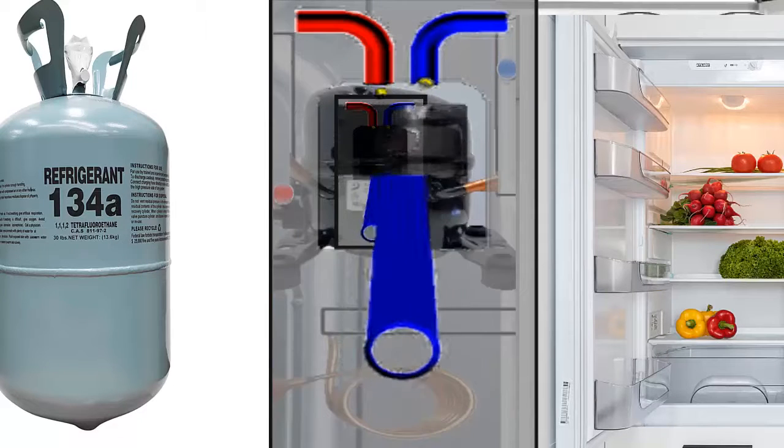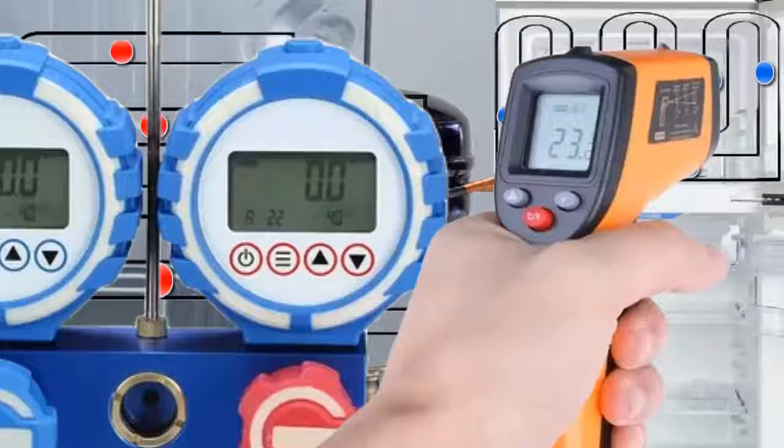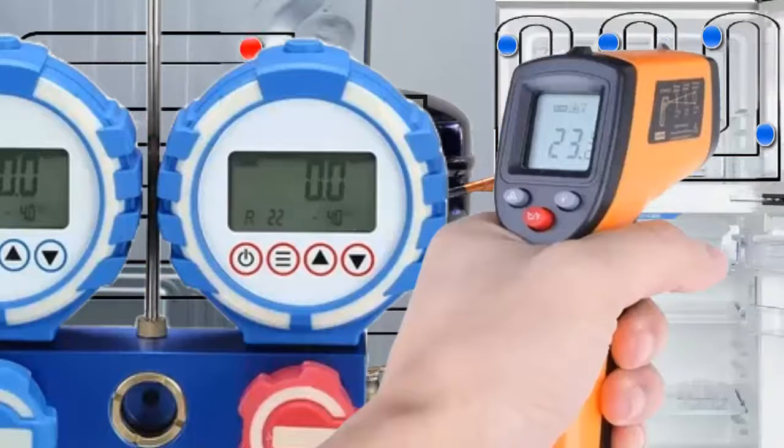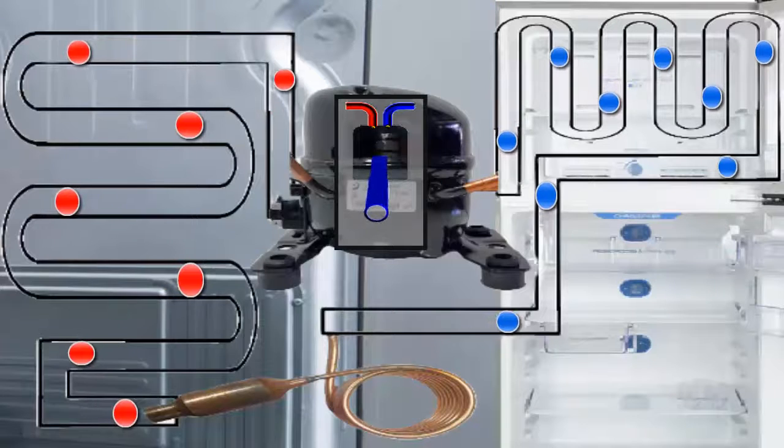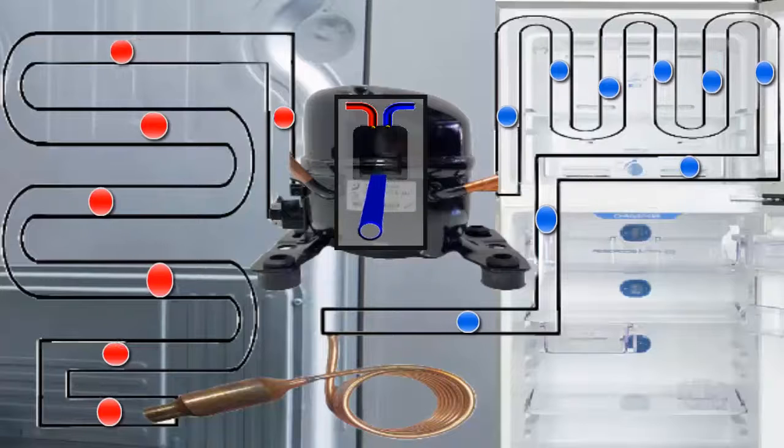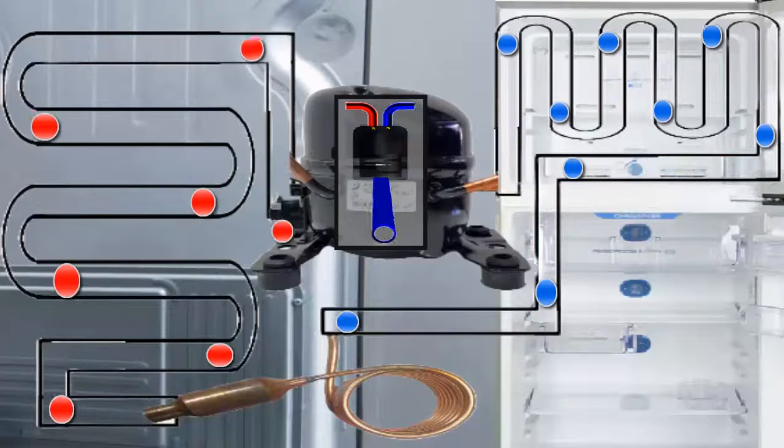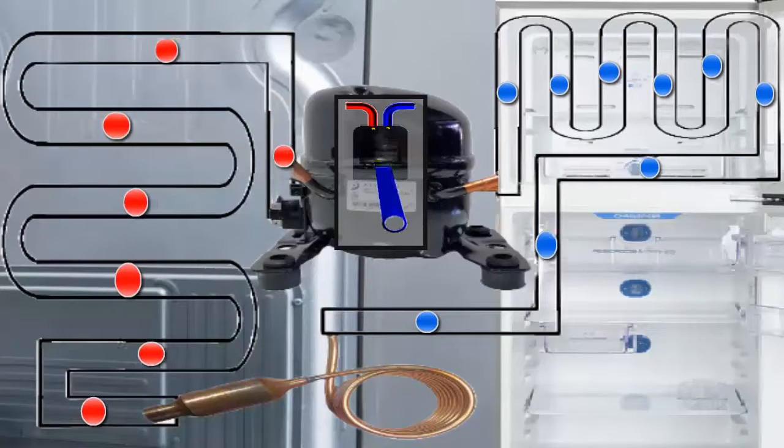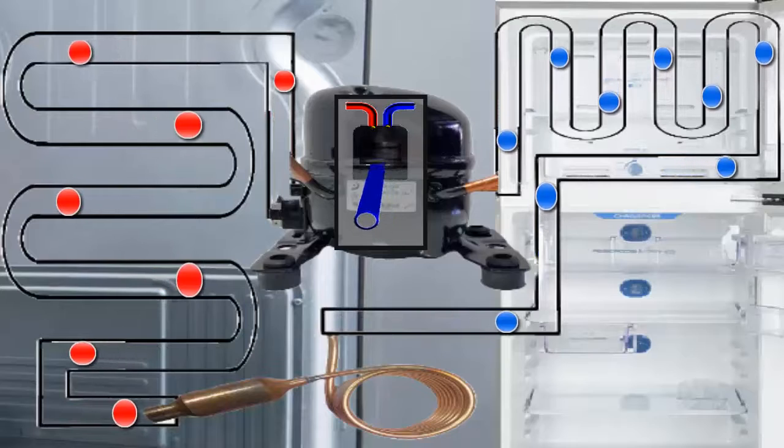In this video, we will study the operating pressures of the refrigerant gas R134A in a household freezer, the parts of the equipment, and its operation. On the screen, we observe the refrigeration circuit of a household freezer that operates with refrigerant gas R134A.